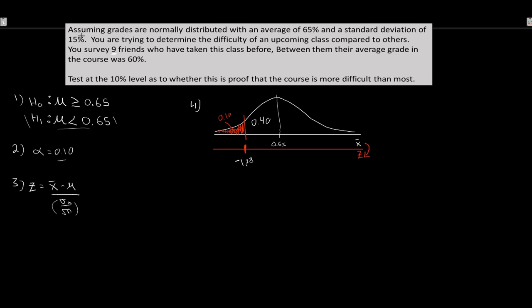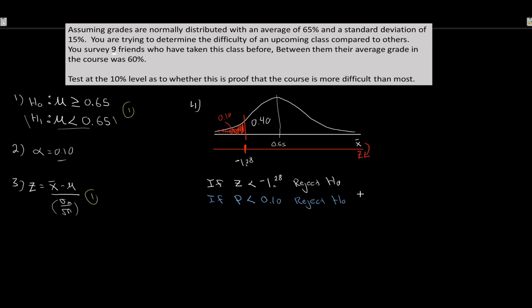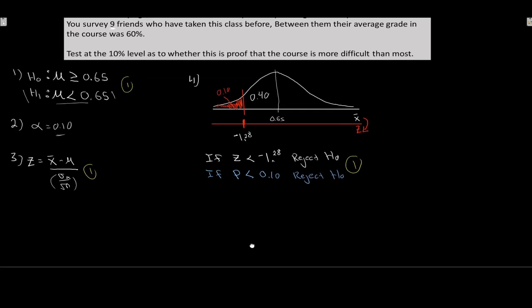The alternative says μ < 65, so the rejection region goes in the left tail. With 10% in that tail, there's 40% in the middle bulk. Looking up 0.40 in the z-table gives the closest value of 0.3997, corresponding to a critical value of negative 1.28. Decision rule: if z < −1.28, reject the null; or if p-value < 10%, reject the null.